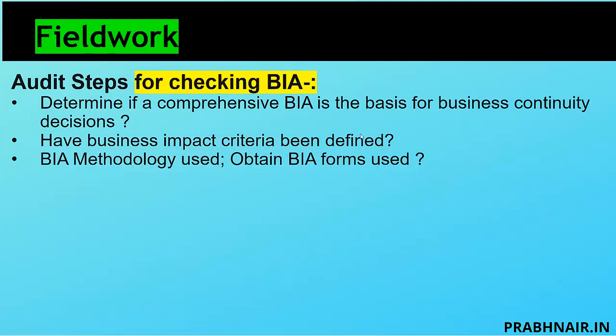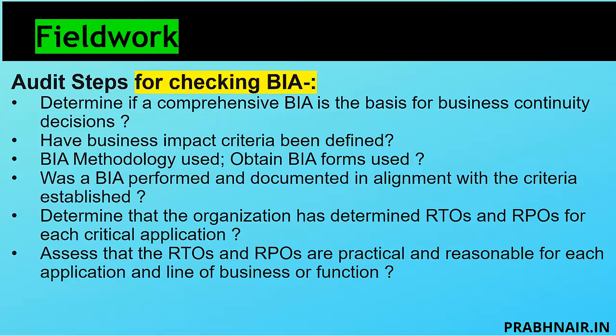We check whether the BIA form has captured necessary data and whether the BIA methodology has been followed. We verify if the BIA performance documentation is aligned with the established criteria. We look at the business process, map it with business process documents, check minutes of meeting records, and verify whether the MTD and RTO have been calculated based on those parameters — because business owners own the risk. We also check whether RTO and RPO are captured properly by the BIA, as BIA is the driving factor for recovery strategy.